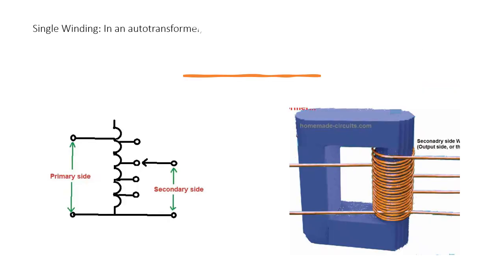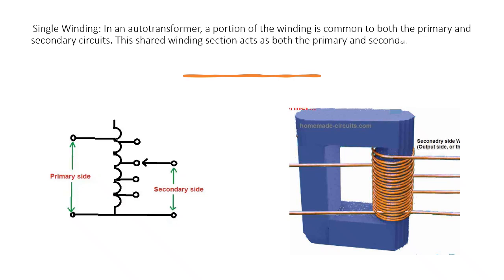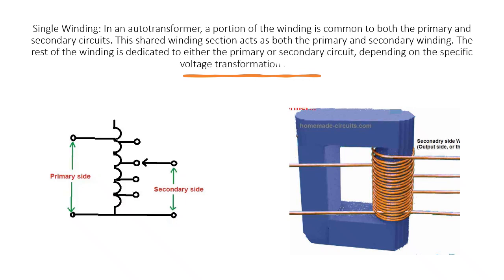Single winding: In an autotransformer, a portion of the winding is common to both the primary and secondary circuits. This shared winding section acts as both the primary and secondary winding. The rest of the winding is dedicated to either the primary or secondary circuit, depending on the specific voltage transformation required.